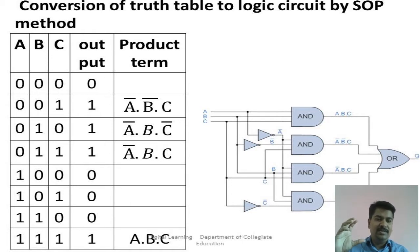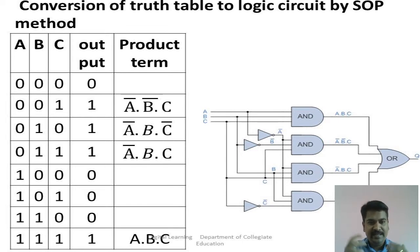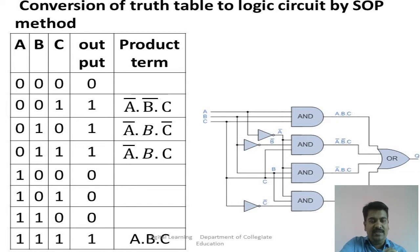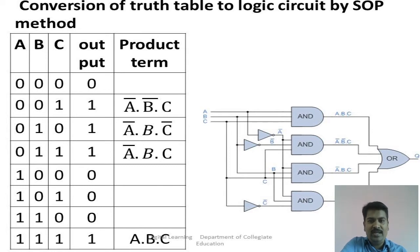After getting the min terms for all output-1 combinations, now sum all the min terms — a logical OR of all product terms. After doing that, you get the final equation: Y = A-bar·B-bar·C + A-bar·B·C-bar + A-bar·B·C + A·B·C. That is the logical equation produced from the truth table by SOP method. After getting the equation, it is simple to build a logical circuit. We need 4 AND gates and 1 OR gate.